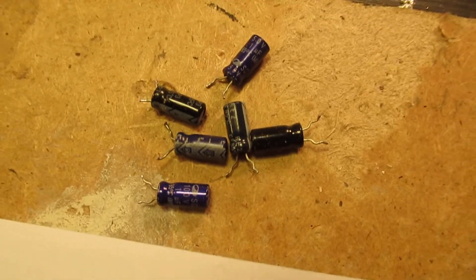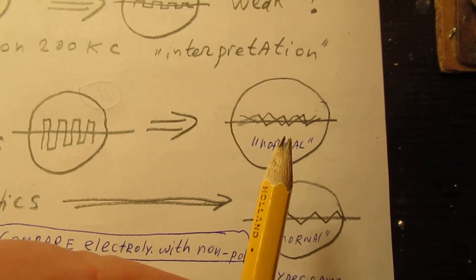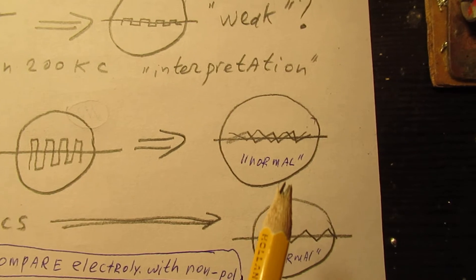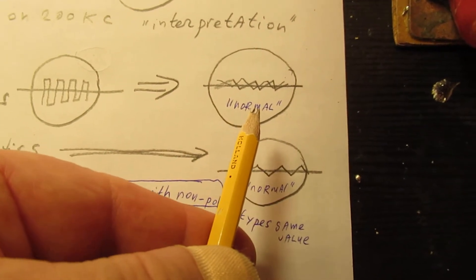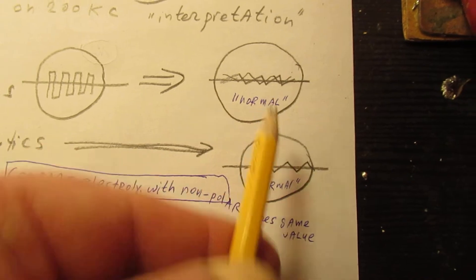Here you see quite a few one microfarad or 0.47 microfarad kind of electrolytic that show this waveform. Compared to a non-polar capacitor of the same value, it shows the same waveform, so I am more or less sure that they are good.